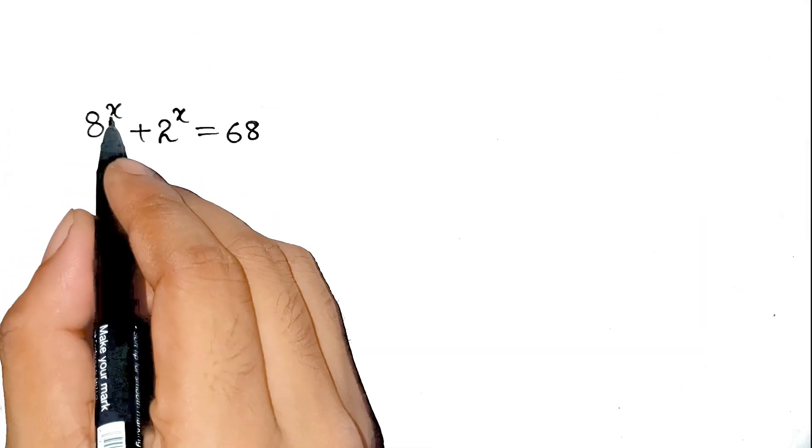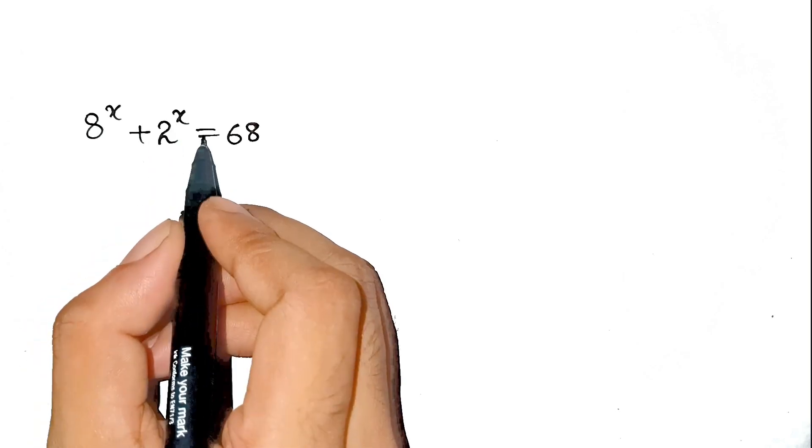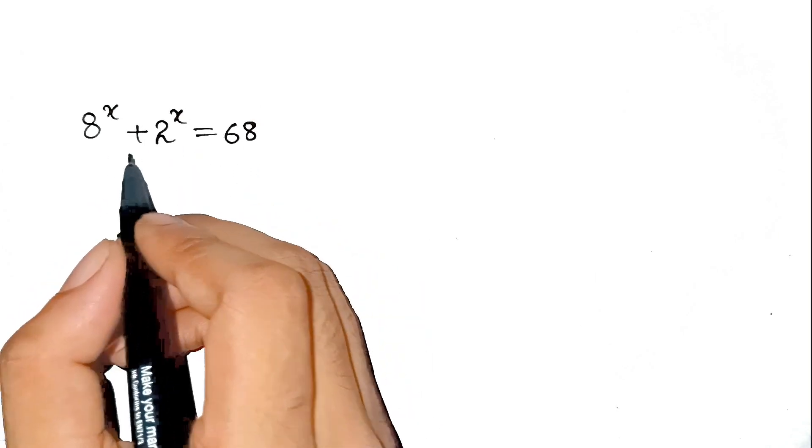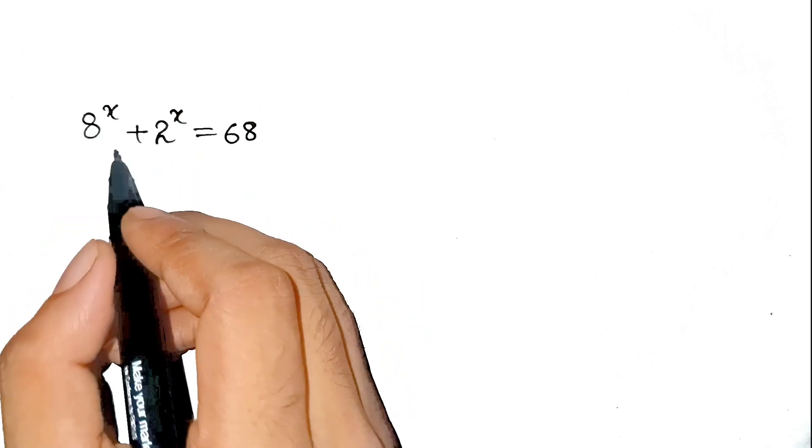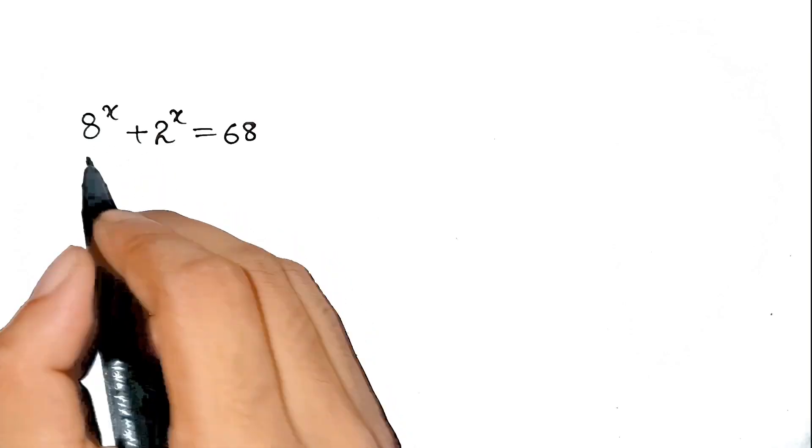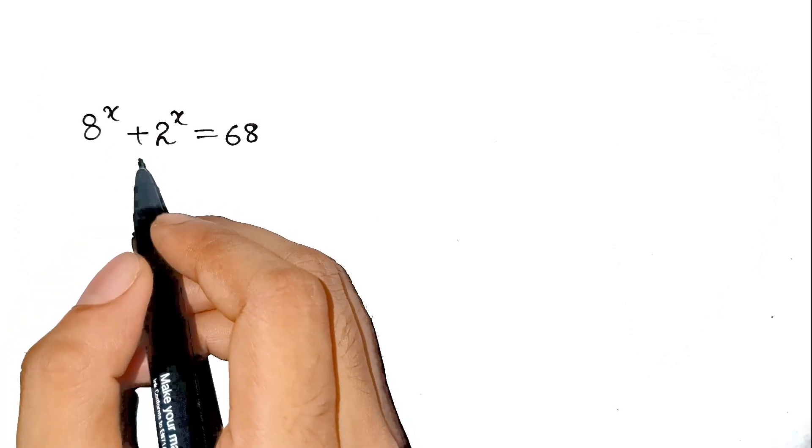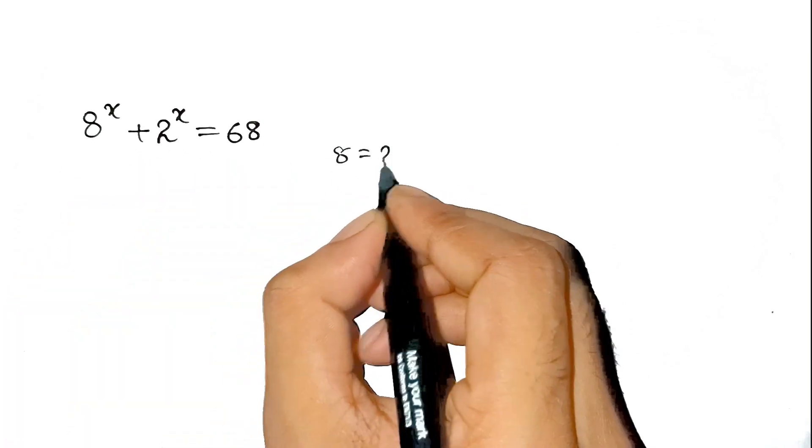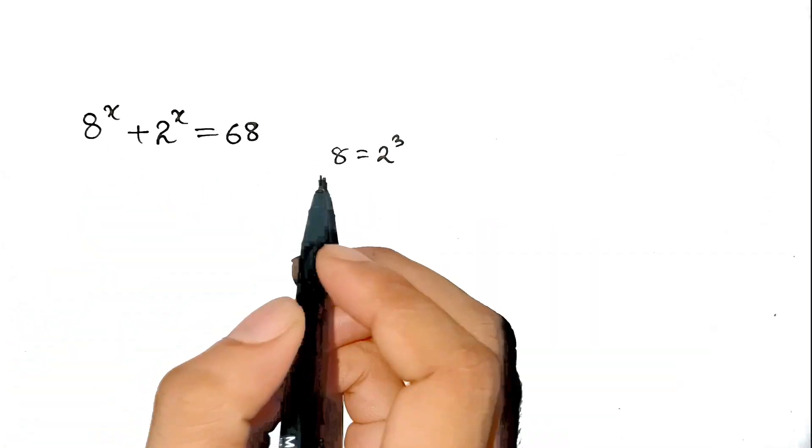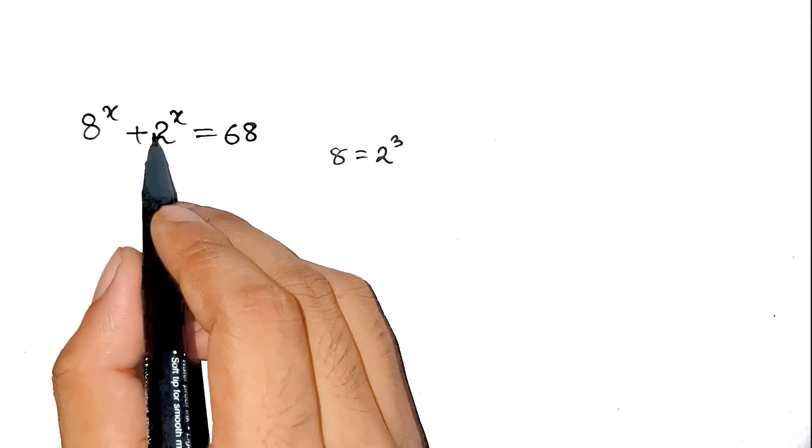We got 8^x + 2^x = 68. Now notice, 8 and 2. These two numbers are related. Like that cousin who shows up at every wedding and eats all the food. 8 is basically 2^3. Yep, 8 is just 2 in beast mode. It's like Charmander evolving into Charizard.